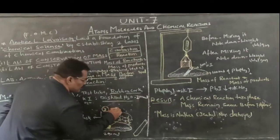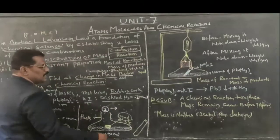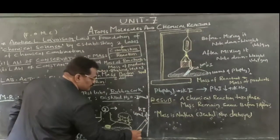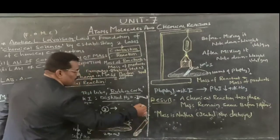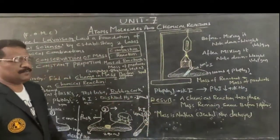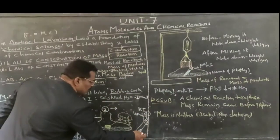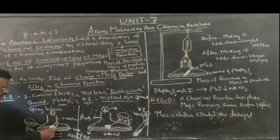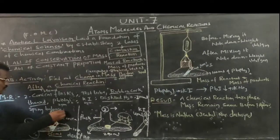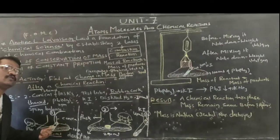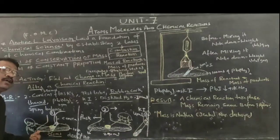Later on, from the second conical flask, take 4 ml of potassium iodide in a test tube. Take 4 ml of potassium iodide and tie this particular test tube with a thread. And slowly bring this particular test tube, in which 4 ml of potassium iodide is there, into the first conical flask, such that the liquid should not be mixed up - such that the liquid existing in the test tube should not be mixed up with the liquid existing in the conical flask.